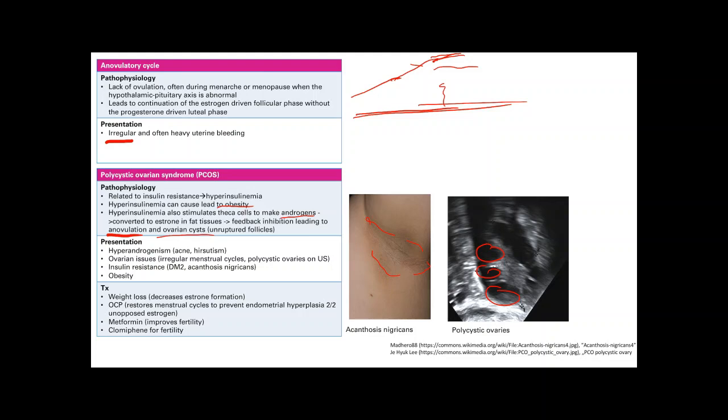And then a second thing you can do is you can give them oral contraceptive pills. So that is going to restore your normal menstrual cycles because you get this nice estrogen that's going to cause your endometrium to grow, and then you also get some progesterone. And then when you stop the pill for a week, you're going to basically get that endometrial sloughing. So you can prevent endometrial hyperplasia.